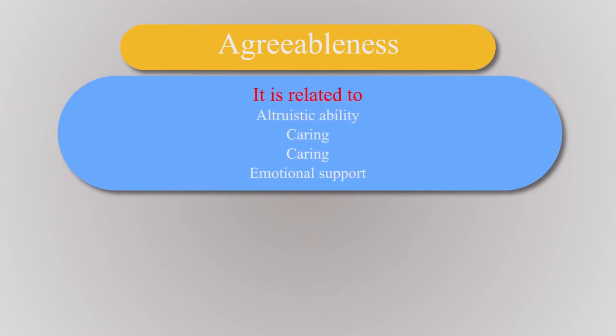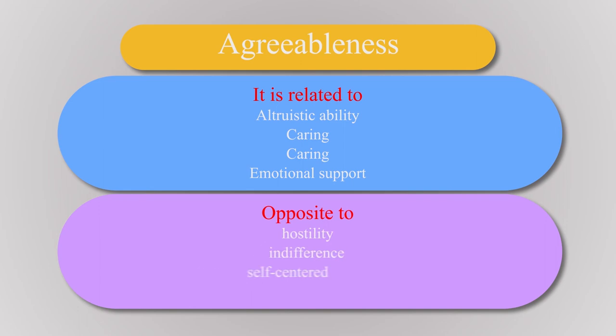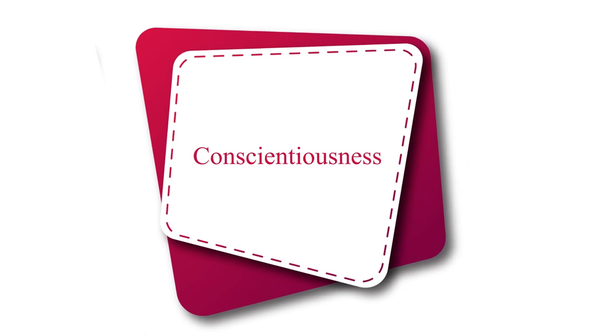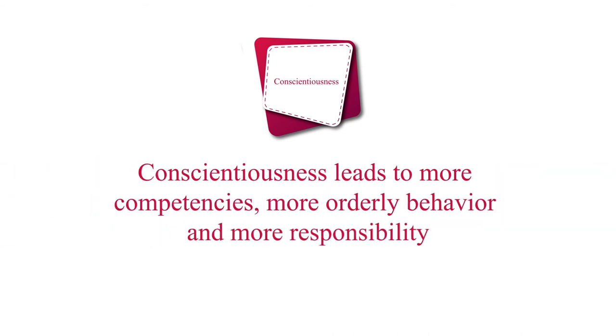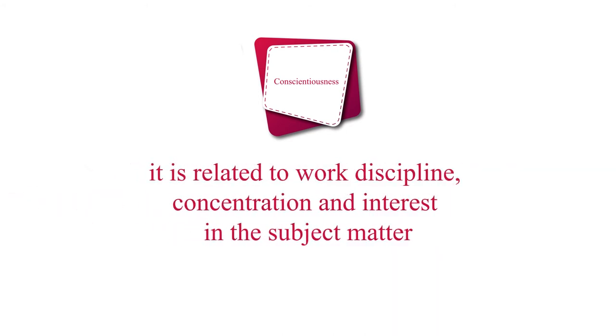Agreeableness is related to altruistic abilities, caring, and emotional support versus hostility, indifference and self-centeredness — these people are altruistic, kind and empathetic. The third type is conscientiousness — these people concentrate on few goals and work hard to achieve them. They are career-oriented, and conscientiousness leads to more competencies, orderly behavior and responsibility. Conscientiousness is related to work discipline, concentration and interest in the subject matter. The strategic approach makes these students capable of organizing their work, working effectively, and managing their time.